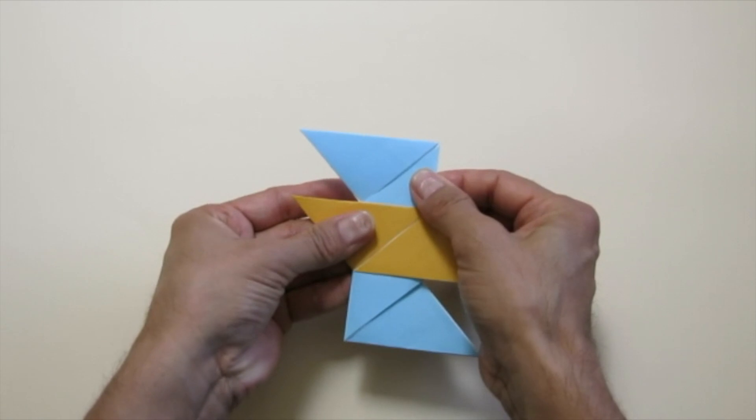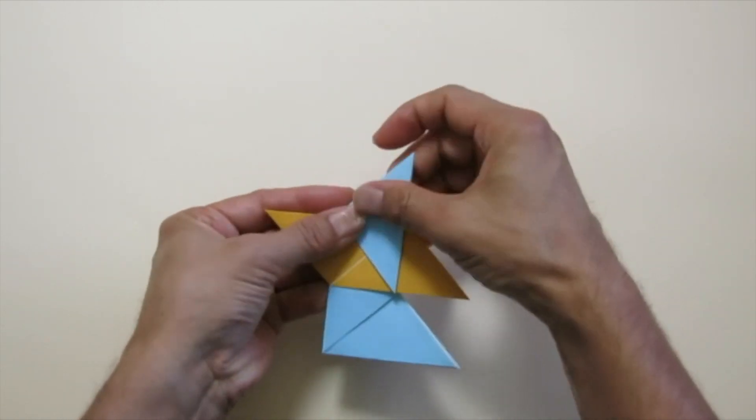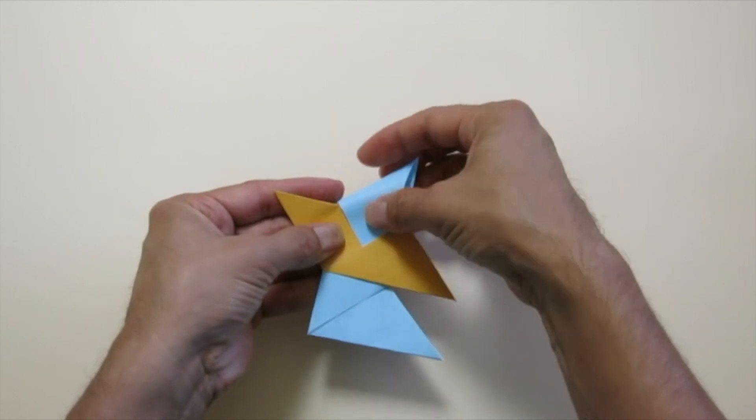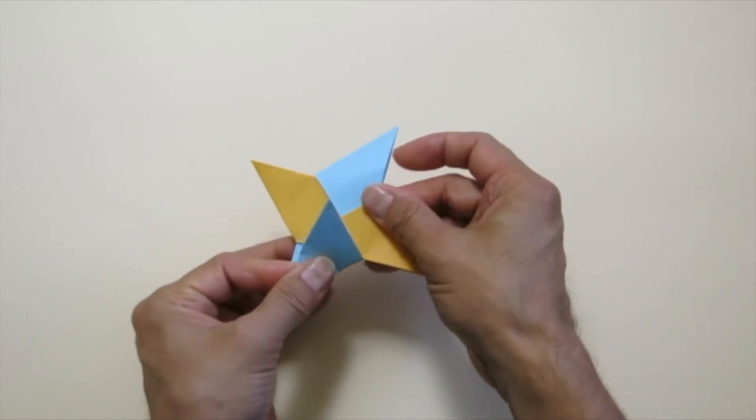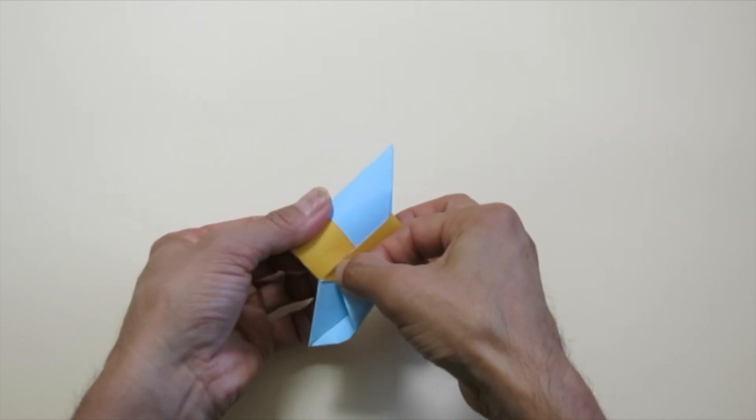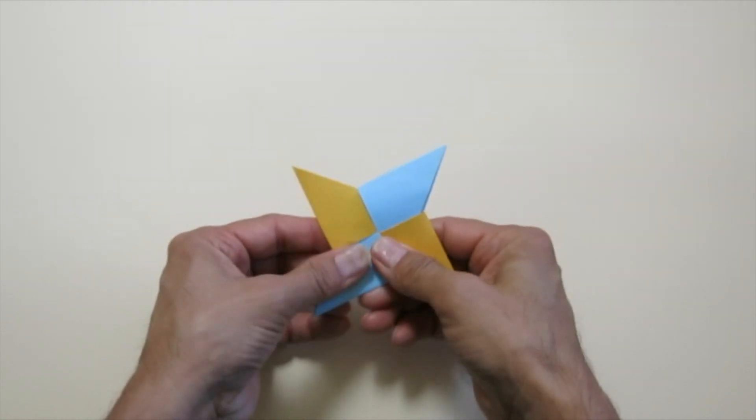Flip over and then fold along this line. Unfold and tuck in this corner into the yellow pocket. That's your star.